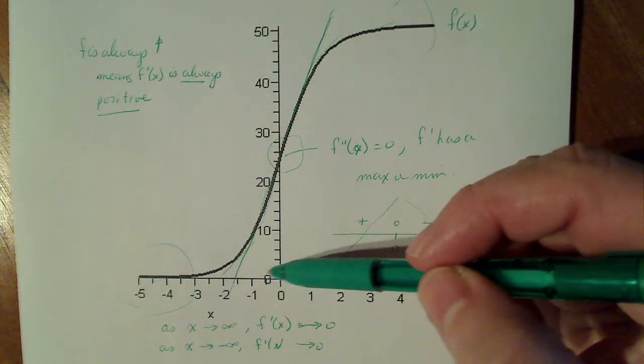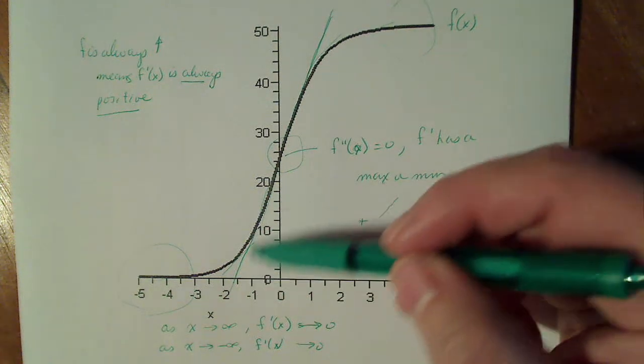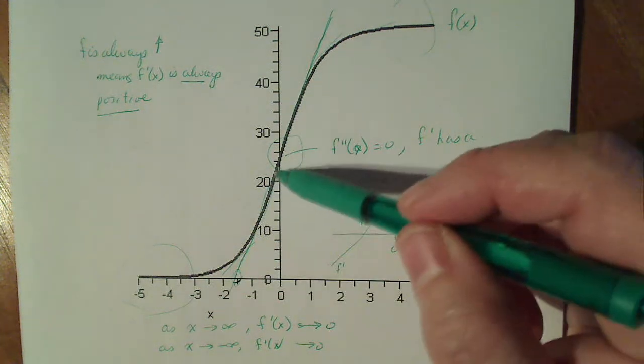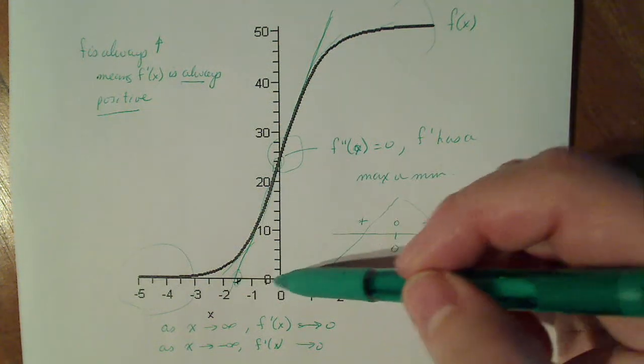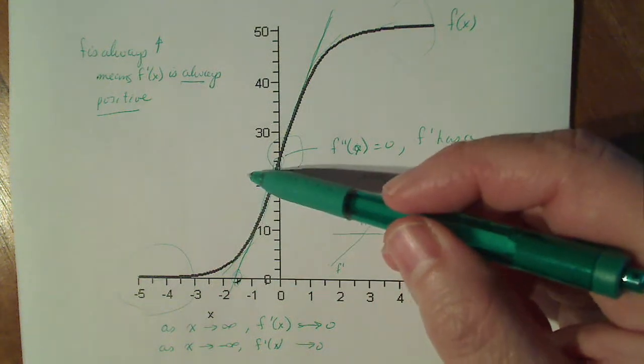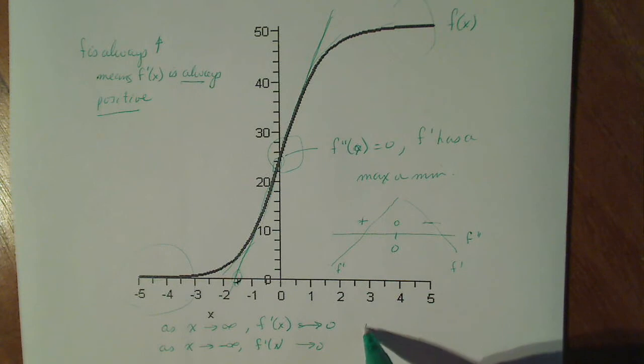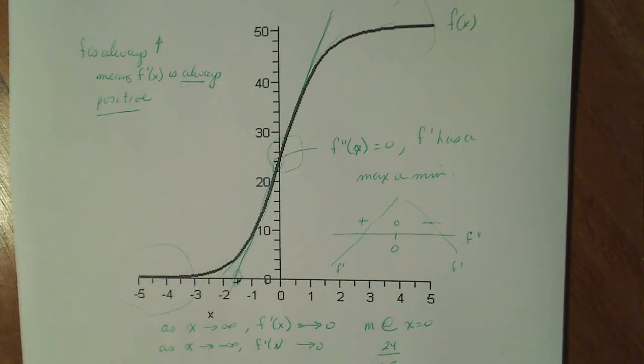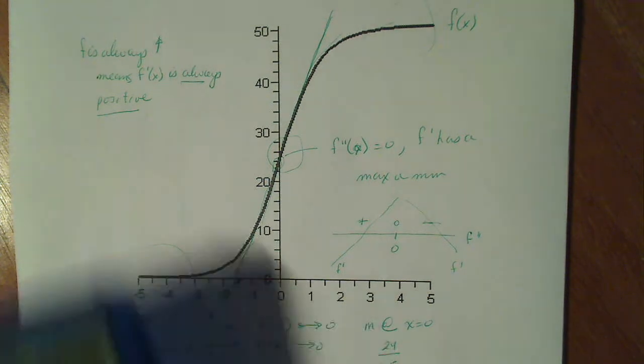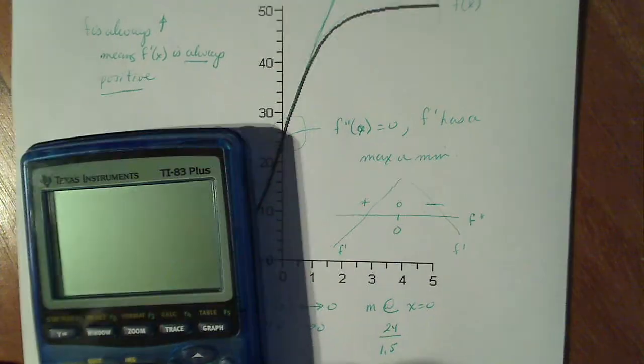So if we were just going to measure this, it looks like it crosses approximately here and it crosses up here at 24. So I have a rise of 24 and a run of minus one and a half. So my slope at x equals zero is rise over run. So let's see what that number is, 24 divided by 1.5.